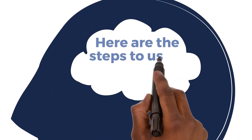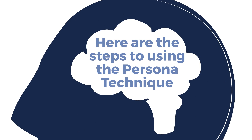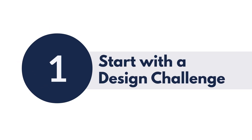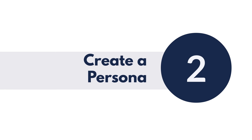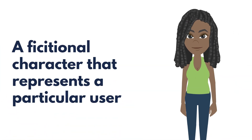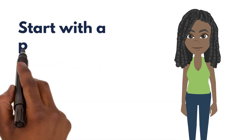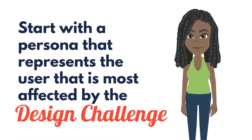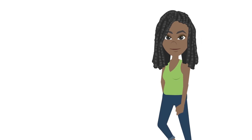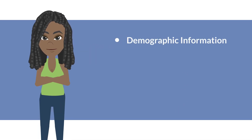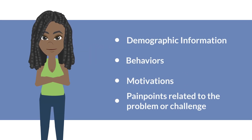Here are the steps for using the persona technique. Step 1: Start with a design challenge. Step 2: Create a persona — a fictional character that represents a particular user. Start with a persona that represents the user most affected by the design challenge. This person should include demographic information, behaviors, motivations, and pain points related to the problem or challenge.